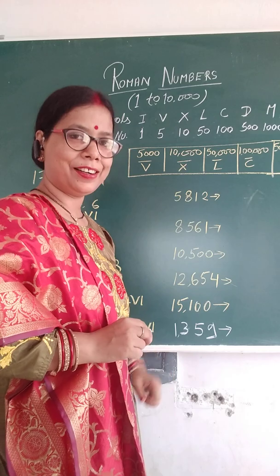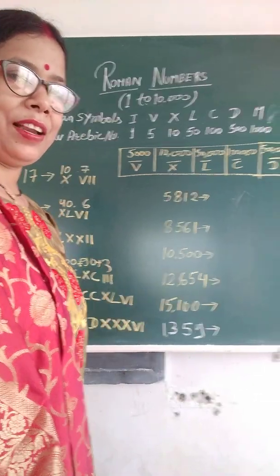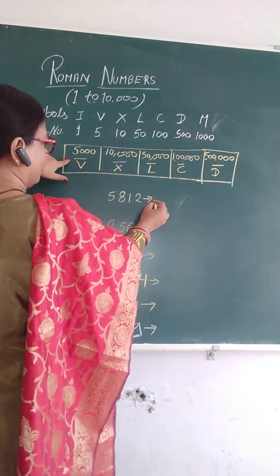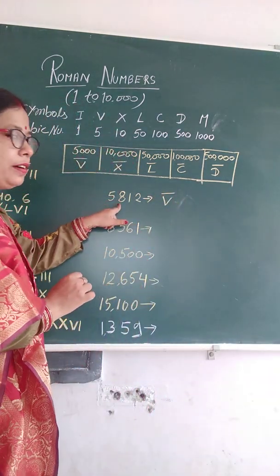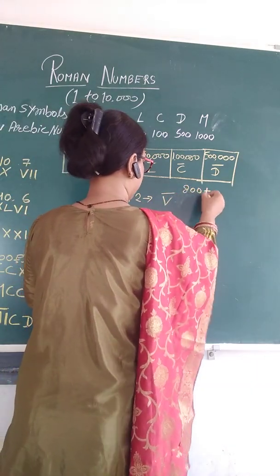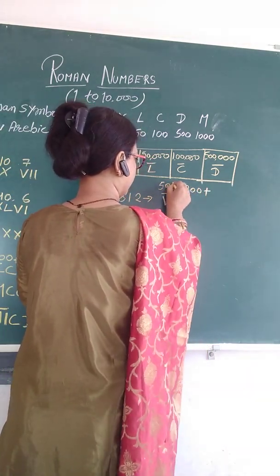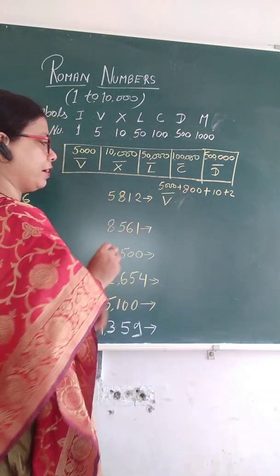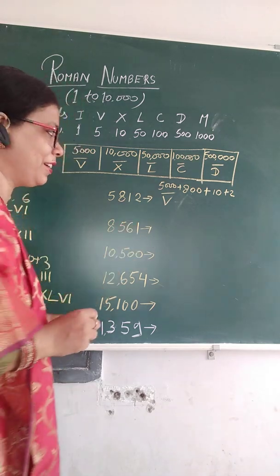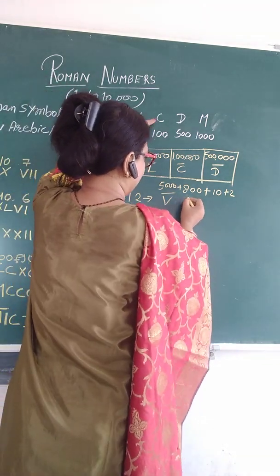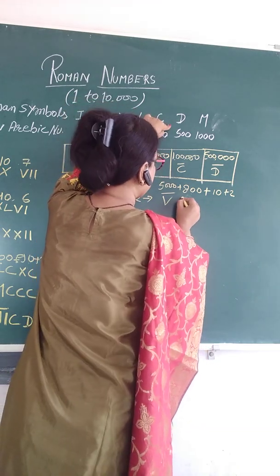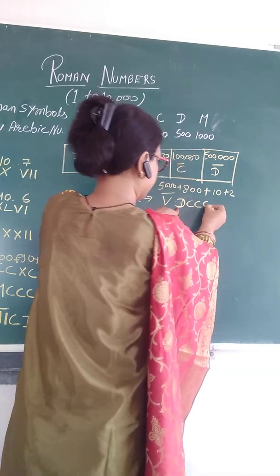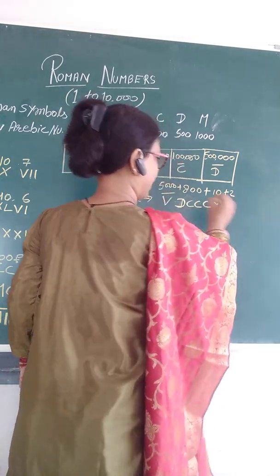Five thousand, eight hundred, twelve — very easy. Five thousand: V with a bar on top. Eight hundred: that's 500 plus 300 — D and three C's, DCCC. Ten is X and 2 is II. So 5812 is V̄DCCCXII.